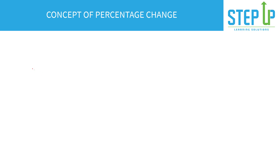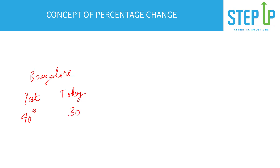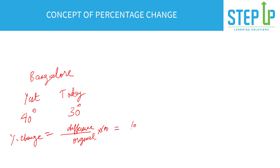I'll begin by discussing the concept of percentage change. Any increase or decrease in a quantity will result in a percentage change. Let's say you're in Bangalore and discussing the weather. Yesterday the temperature was 40 degrees and today it is 30 degrees. The formula for percentage change is: the change divided by the original, into 100. That means 40 minus 30 is 10, upon 40, into 100 — that becomes 25%.